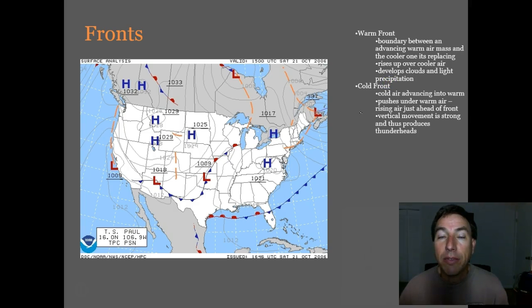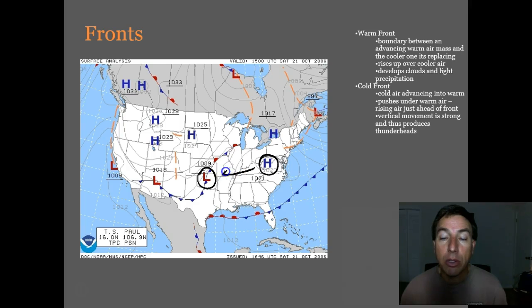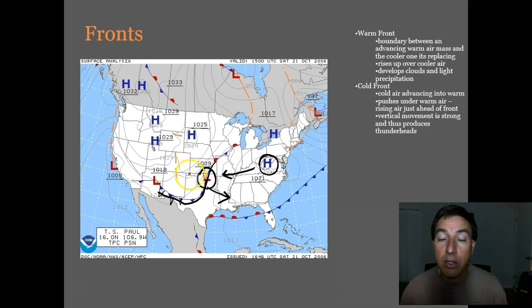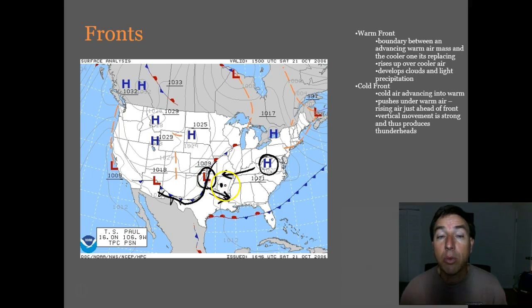This brings us to fronts, which are caused by high and low pressure. On a weather map you'll see H for high pressure areas and L for low pressure areas. Winds go from high to low pressure. With a low pressure system you get a cold front — shown by triangles moving in the direction of arrows. The warm humid air created by the high pressure goes underneath the cold air, producing thunderstorms. If you lived in Arkansas, you could expect thunderstorms within the next 24 hours at that location.